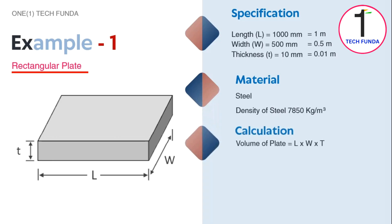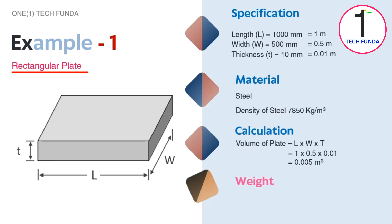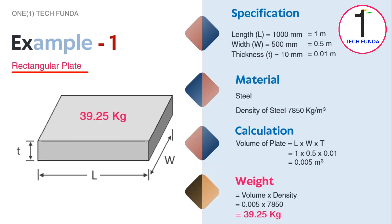Now we calculate the volume of the plate. The formula is length × width × thickness. After substituting the given values into the formula, we obtain the volume of the plate. Now we have volume and density, and after putting the values into the formula, we get the weight. The weight of the rectangular plate is 39.25 kg.